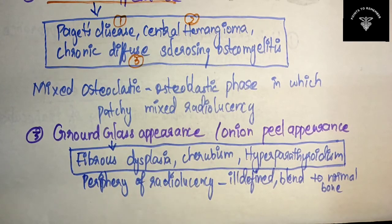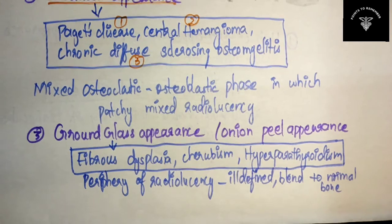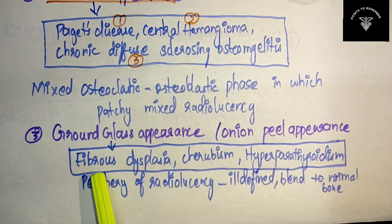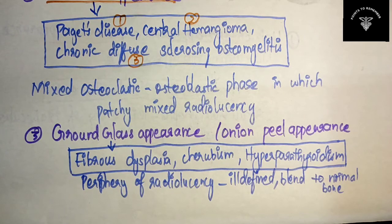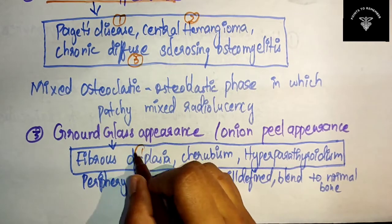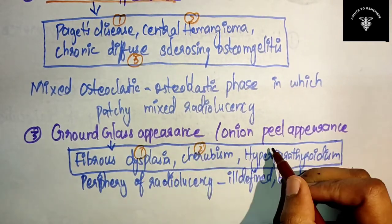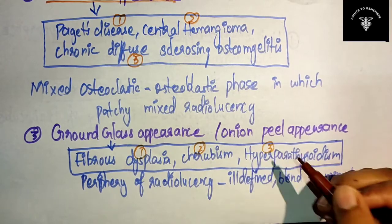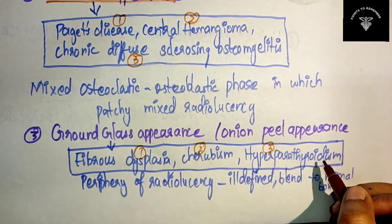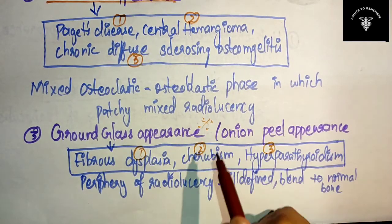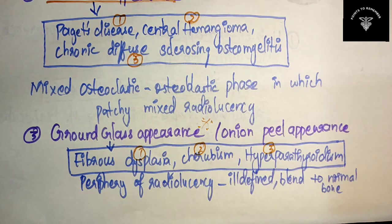So where can you find the ground glass appearance? It is found in fibrous dysplasia as the first condition, and the second and third are cherubism and hyperparathyroidism. These are the most important appearances.